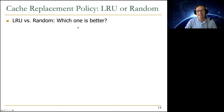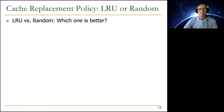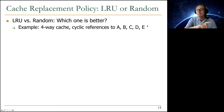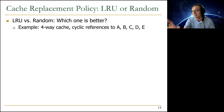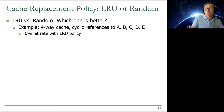Let's compare LRU and random. Consider a four-way cache with cyclic references to blocks A, B, C, D, E, all mapping to the same set. With LRU, you get 0% hit rate because you're always evicting the block you're about to use — this is called set thrashing, where the program's working set in a set is larger than the set associativity. Here the working set is five blocks but associativity is four.